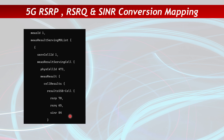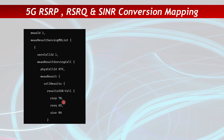Let's understand quickly how these values are mapped and how to convert them to real values. Here we have a report from the UE for serving cell ID 1 — this is the PCI (physical cell ID) 473 — and it reports three values: RSRP, RSRQ, and SINR. You can see it's a results SSB, showing that these values are coming from the SSB.